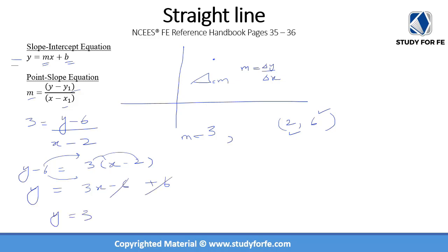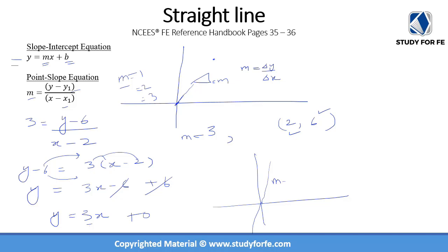Remember a slope of 1 makes a 45-degree angle. A slope of 3 is much steeper than a slope of 2, and a slope of 4 is steeper than 3, and so on — as m increases, the steepness of the line increases. This line with m = 3 and b = 0 will look quite steep. We just had to do a couple of extra steps to put the equation into standard form.